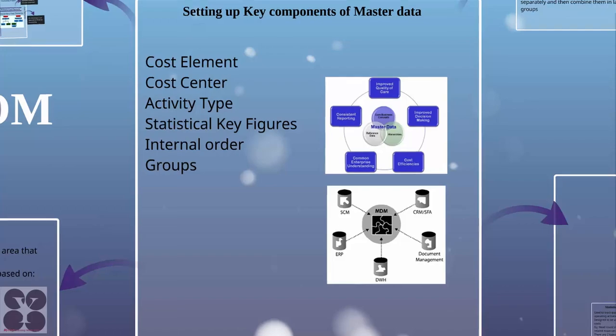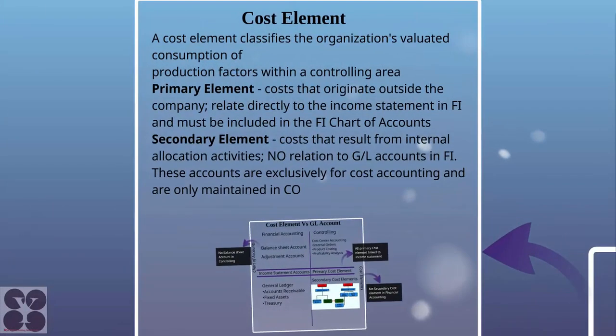The cost element classifies the organization's valued consumption of production factors within a controlling area. There are two types: primary elements and secondary elements. A primary cost element is a cost that originates outside the company, relates directly to the income statement in FI, and must be included in a FI chart of accounts. Any expense account on our profit and loss account should be created as a primary cost element.